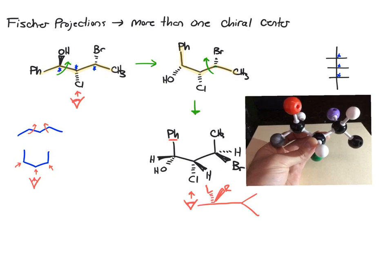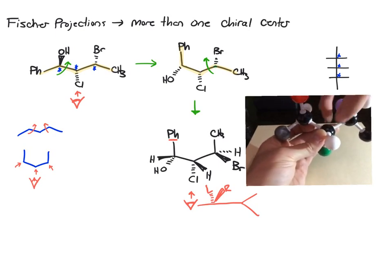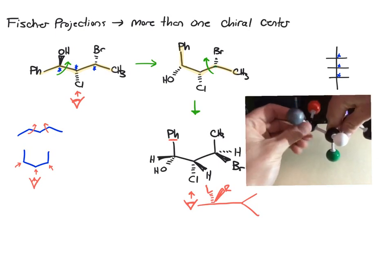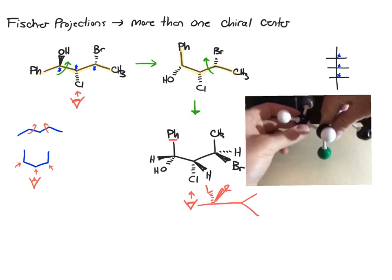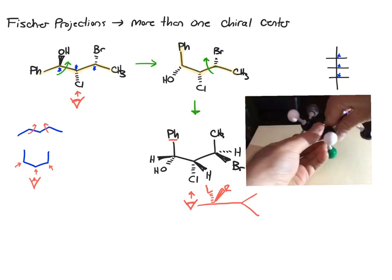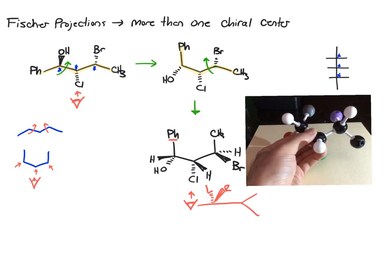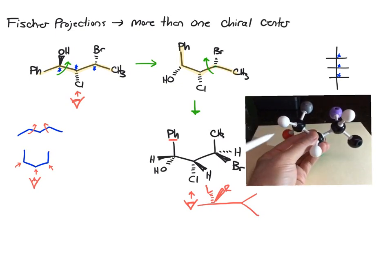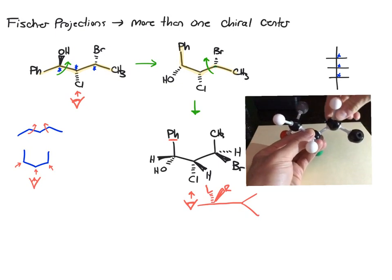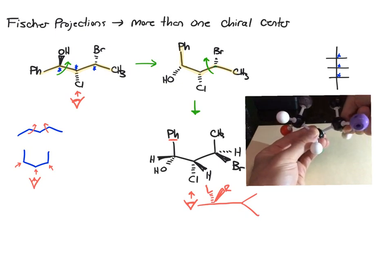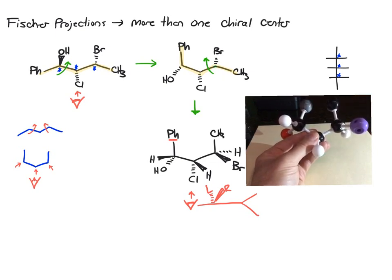So what I've done here is in the first step I rotated this phenyl group up like that, and that brought the H out and the OH back. And then I rotated this methyl group up in the second step, and that rotation brought that bromine out to the front.